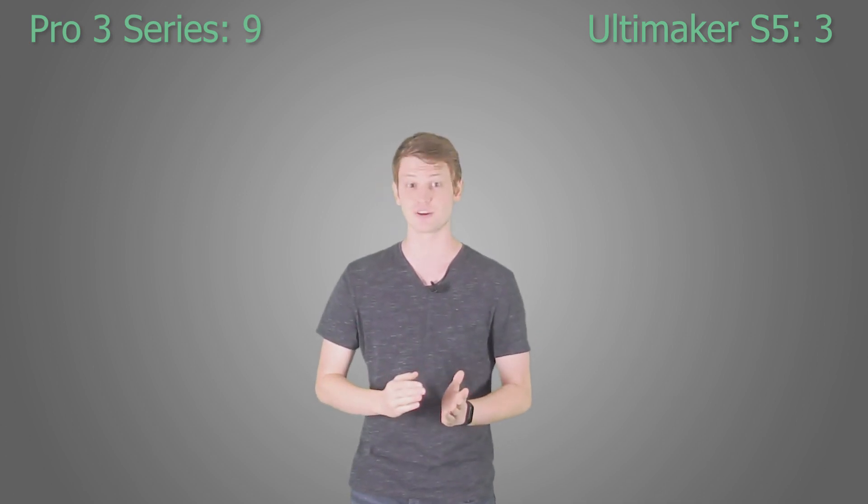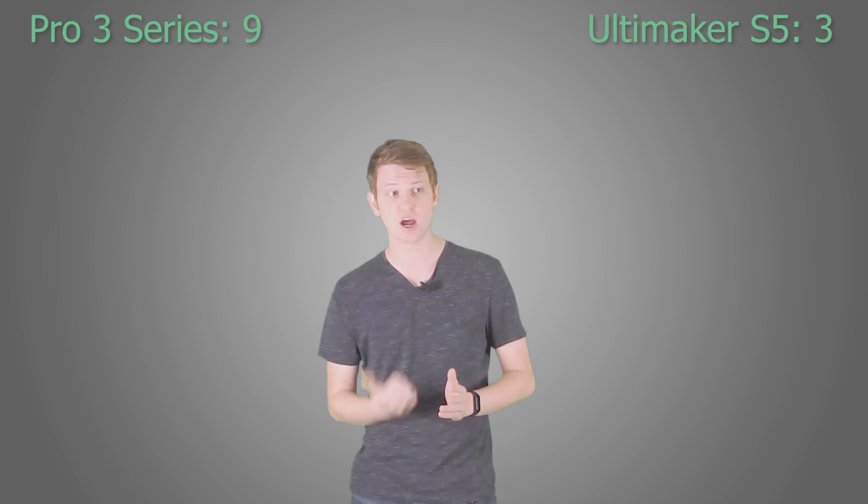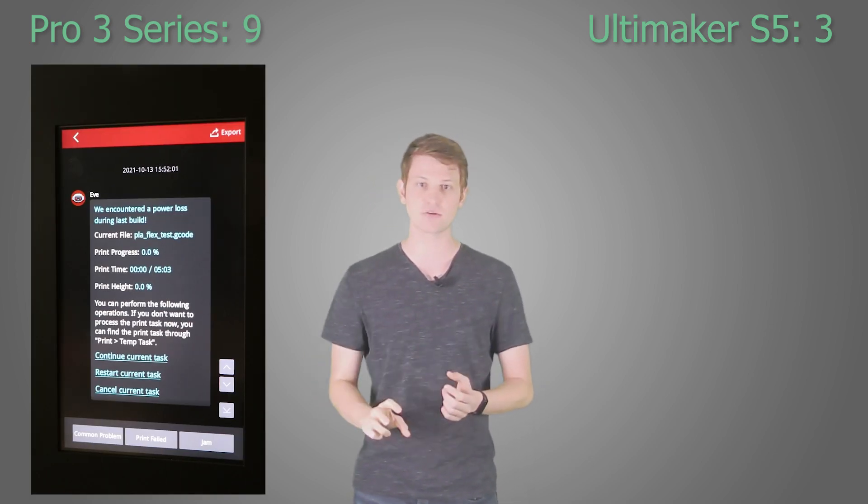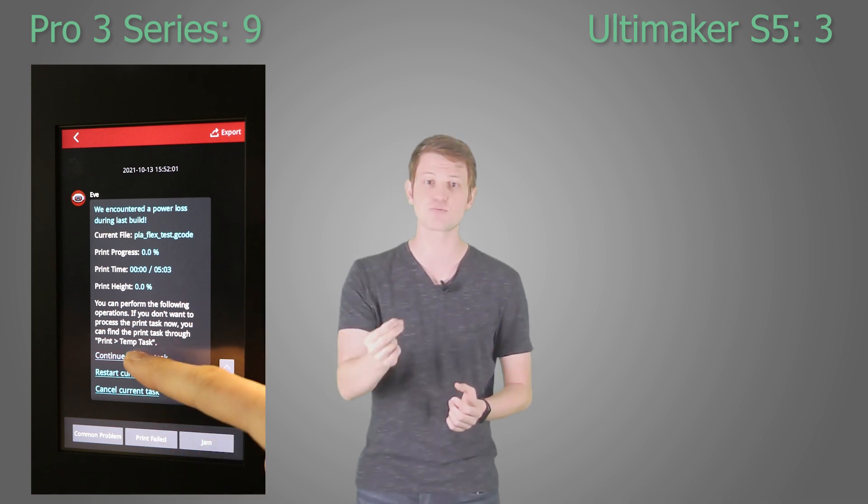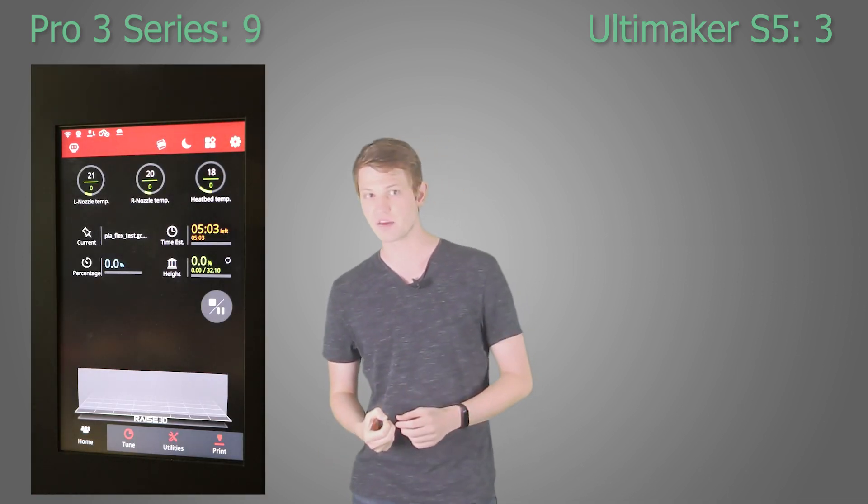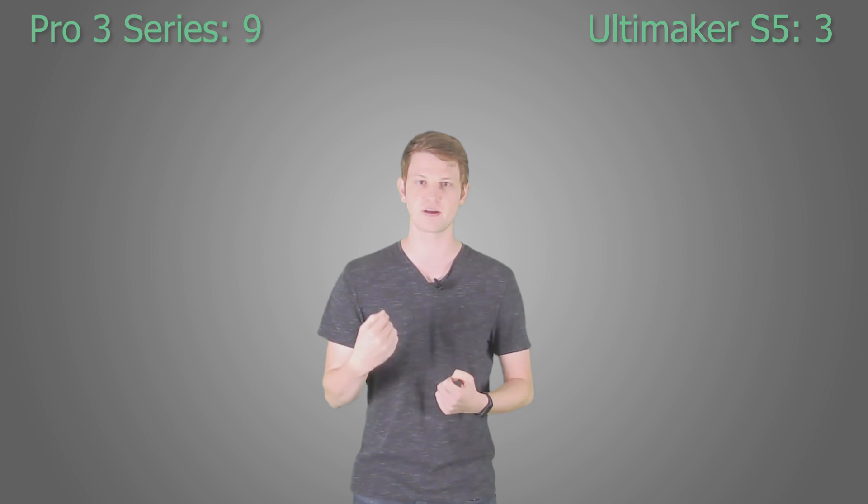Both printers feature a filament ran out sensor, which, in my opinion, is the least you can expect when spending this much money on a 3D printer. However, only the Pro 3 series has a recovery after power loss feature. This means that after a power outage, the printer can recover and continue printing your part from where it was interrupted. The Ultimaker S5 has no such feature and would require a separate UPS to mitigate the effects of an unexpected power outage.